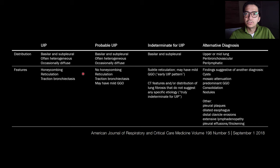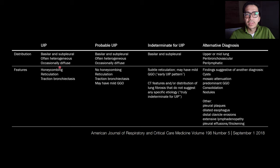The second column is probable UIP. This is exactly the same as the UIP category, except that instead of having honeycombing, these patients don't have honeycombing. So if you see a patient with basilar and subpleural distribution of fibrosis with reticulation and traction bronchiectasis, that's a probable UIP pattern. Whereas if that same patient also has honeycombing, that is a UIP pattern.